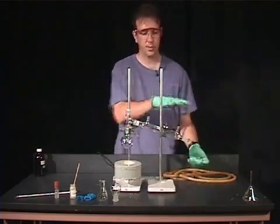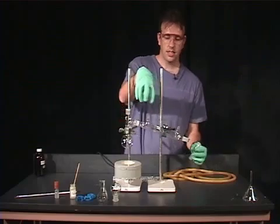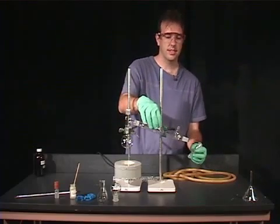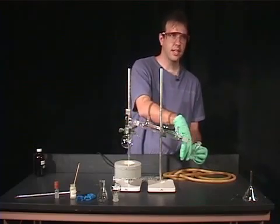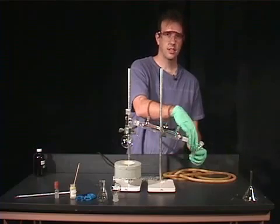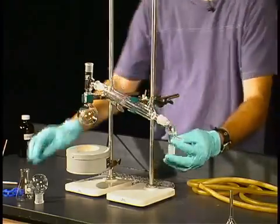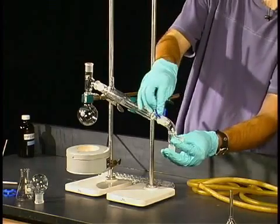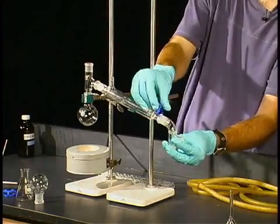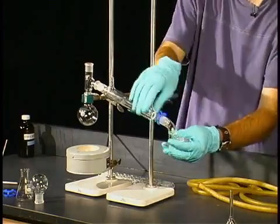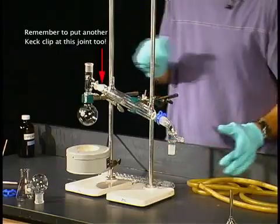At this point, the vapor has gone through the water jacketed condenser and has condensed. So when it reaches the outlet, it is no longer a vapor. So we don't have to worry about grease at this point. We can add our vacuum adapter and add a keck clip here to stabilize our glassware so it doesn't fall off.